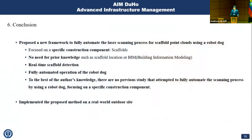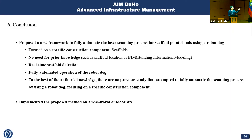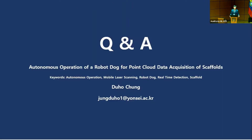For conclusions, these are my contributions. I proposed a new framework to fully automate the laser scanning process for scaffold point clouds using a robot dog, focusing on a specific construction component — scaffolds — without any prior knowledge such as scaffold location, BIM, or a construction site map. As far as I know, no previous studies have attempted to fully automate the scanning process using a robot dog focusing on this specific construction component. Most importantly, I implemented the proposed method on a real-world outdoor site. Thank you for listening — questions are welcome now or by email.